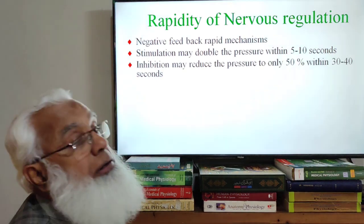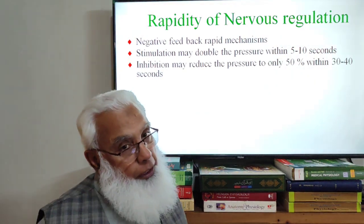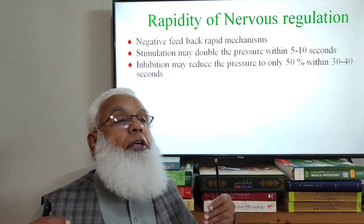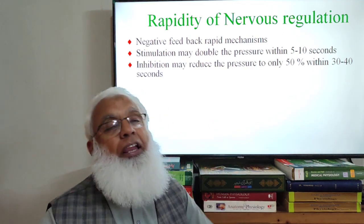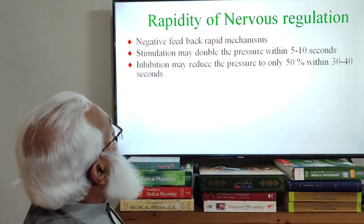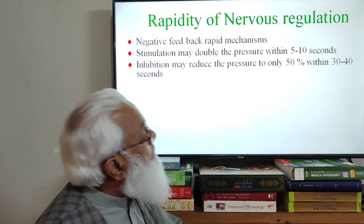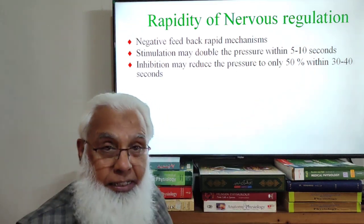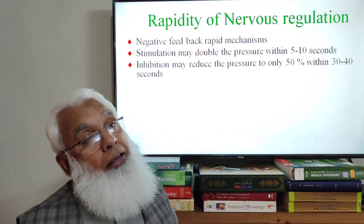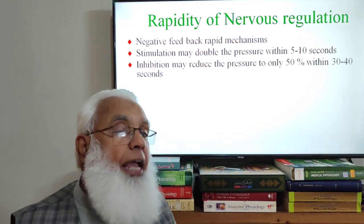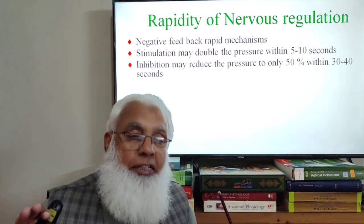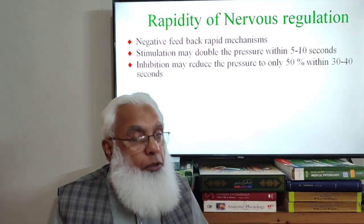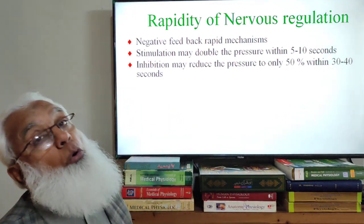On the inhibitory side, inhibition may reduce the blood pressure to only 50% within 30 to 40 seconds — for example in shock or when a person faints. This is also very rapid. Within seconds blood pressure may fall; within seconds blood pressure may increase according to requirements. So these nervous mechanisms are extremely rapid.